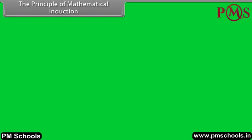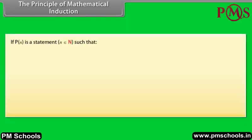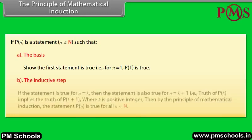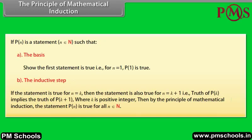The principle of mathematical induction: If P(n) is a statement, n belongs to capital N, such that — the basis: the first statement is true, that is, for n = 1, P(1) is true; and the inductive step: if the statement is true for n = k, then the statement is also true for n = k + 1, that is, truth of P(k) implies the truth of P(k+1), where k is a positive integer — then by the principle of mathematical induction, the statement P(n) is true for all n belonging to capital N.